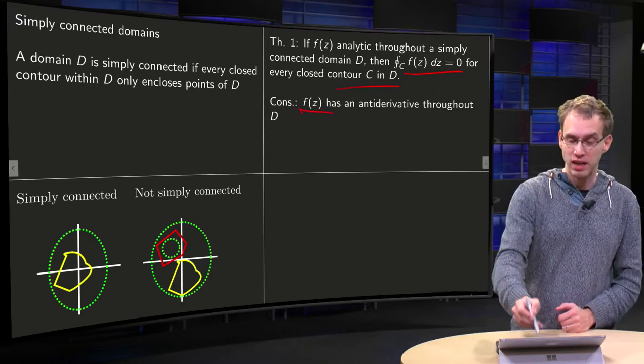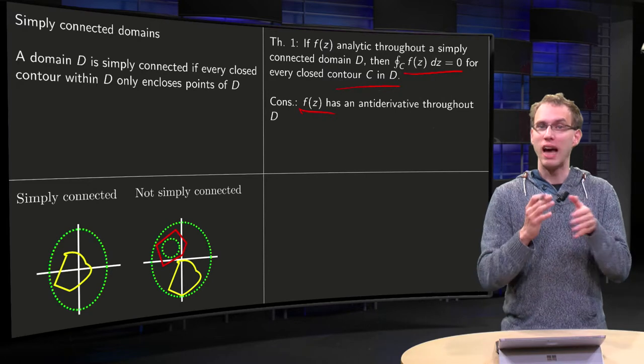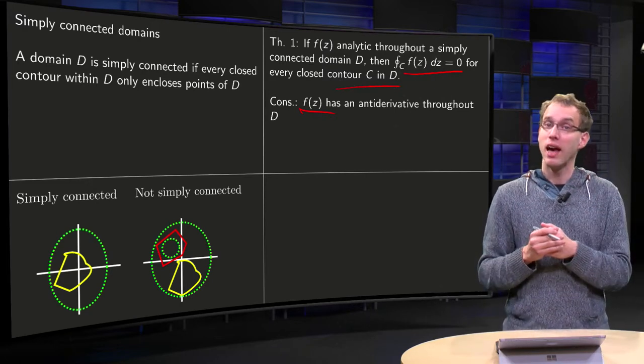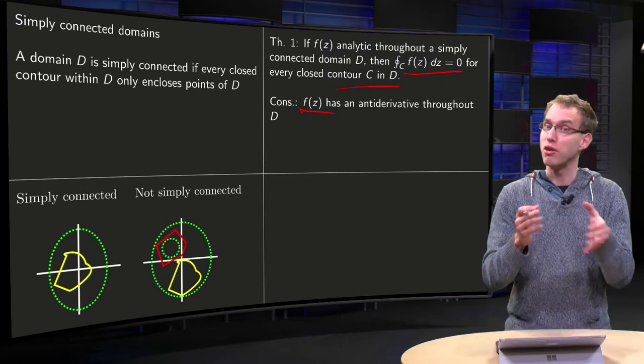because your integral along any closed contour will be zero, we had this theorem that f of z has an antiderivative throughout D. Well, it's not given explicitly what it is, but you know, f of z has an antiderivative, just the theorem doesn't tell you how to find it.